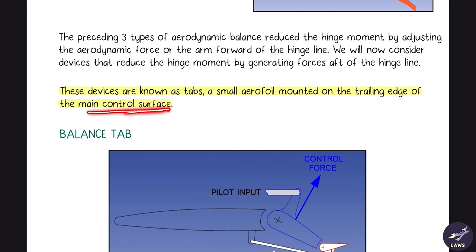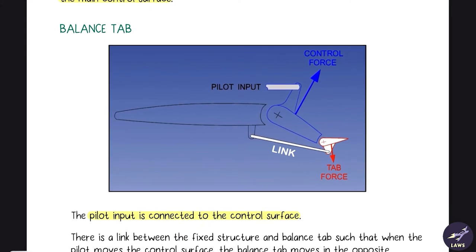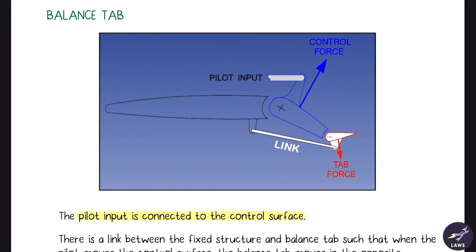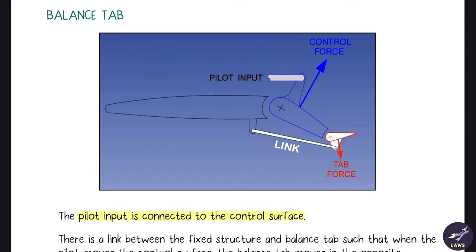First we look at the balance tab. The pilot's control column input is connected directly to the control surface, and there is a link between the aircraft's fixed surface and the tab. Whenever the pilot moves the control surface, the tab moves in the opposite direction. Since the forces are opposite, the overall hinge moment is reduced.